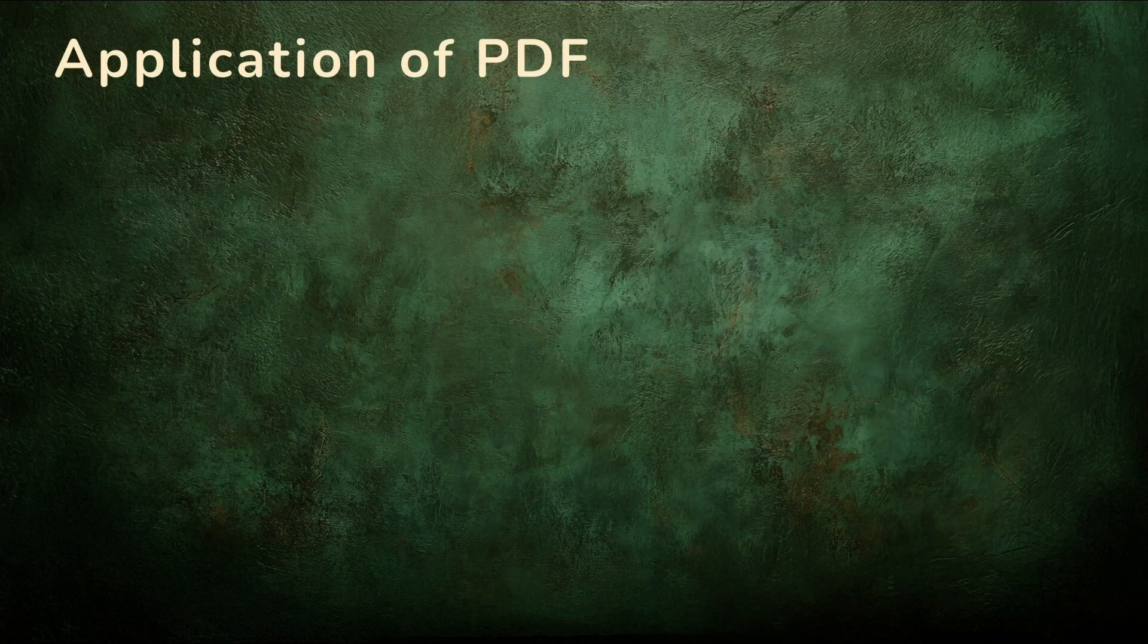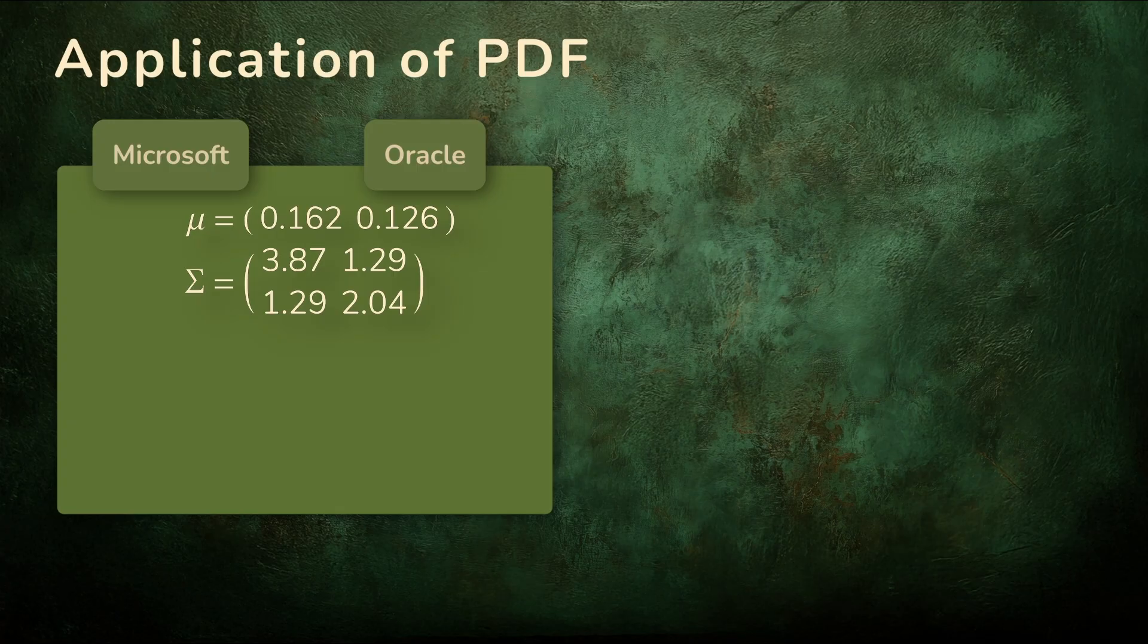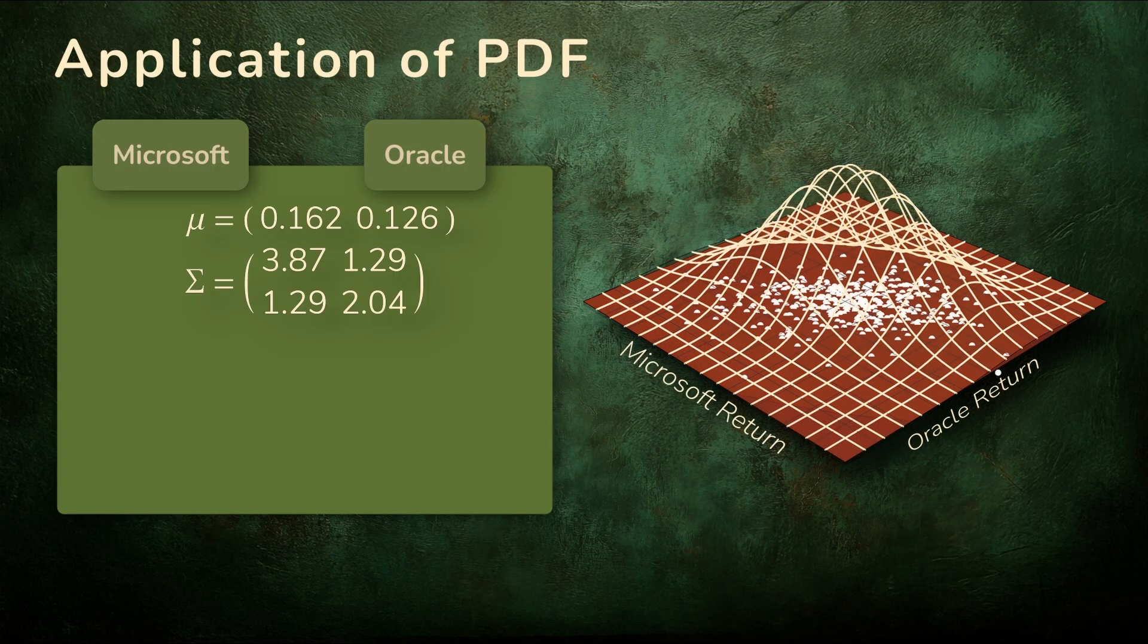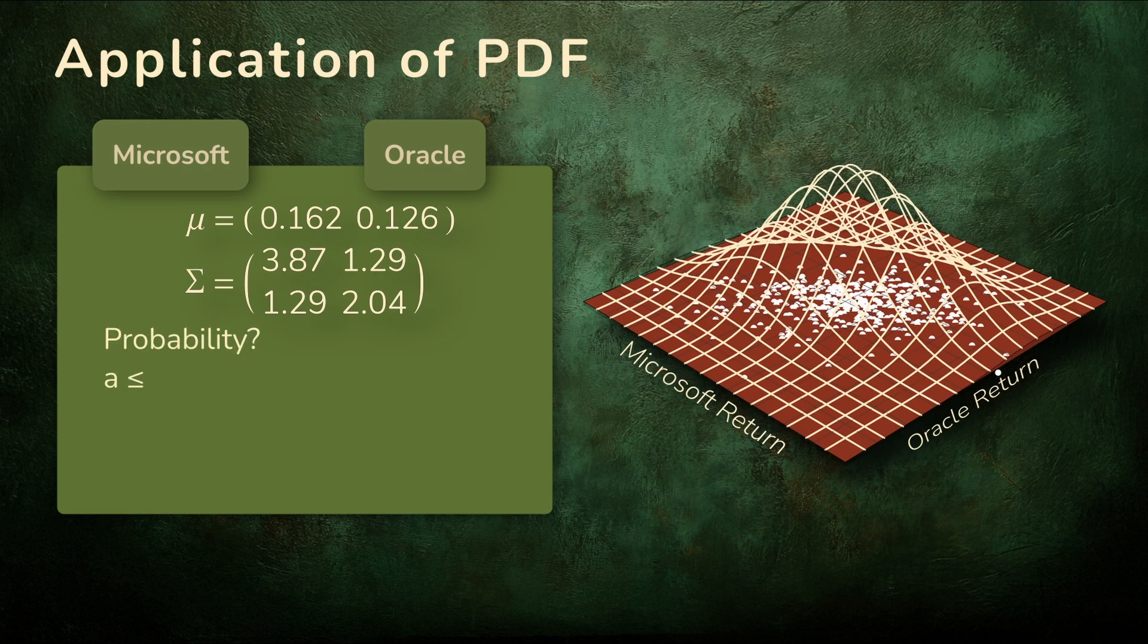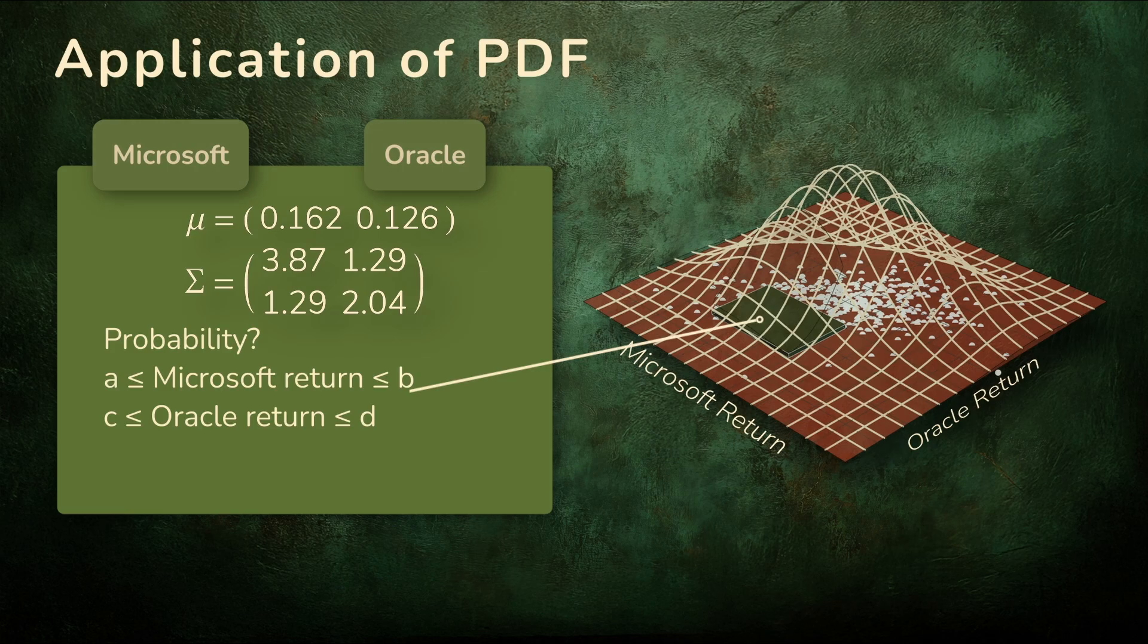Let's put the two-dimensional PDF to work, returning to our stock pair, Microsoft and Oracle. Here is the mean vector we calculated earlier, and the covariance matrix that went with it. Together, they define the PDF, the surface hovering above our scatter plot. Suppose we want the probability that Microsoft's return lands between two bounds, and at the same time, Oracle's return lands between its own bounds. That region shows up here as a rectangle.